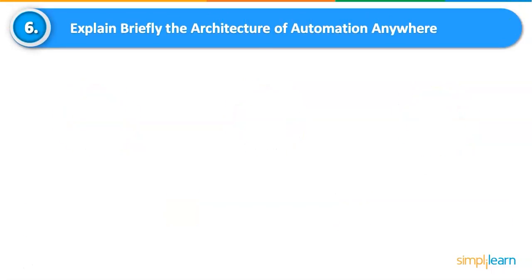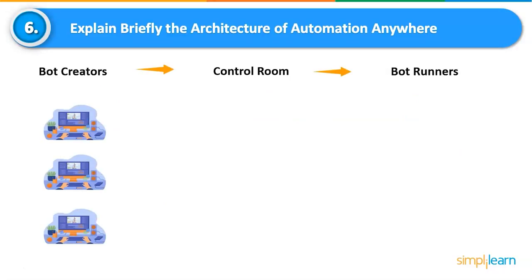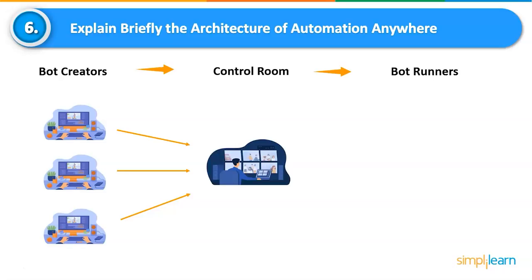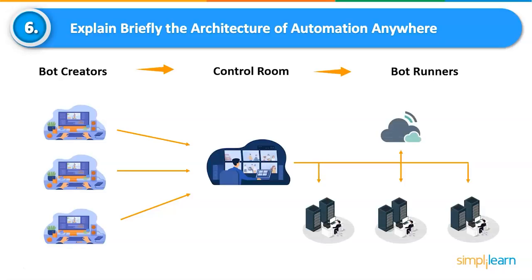Explain the architecture of Automation Anywhere. The platform is built using a distributed architecture. The Enterprise Control Room is a web-based platform that manages the development and execution of the digital workforce and provides centralized management. Bot Creators and Bot Runners are linked to the Enterprise Control Room. Bot Creators are software development platforms for authoring and customizing automations. Bot Runners are runtime systems deployed on machines that carry out the automations; they can be installed on desktops, in data centers, or in the cloud.